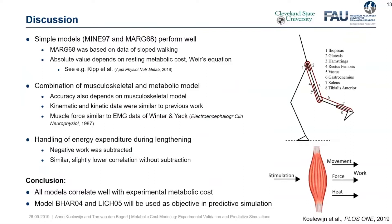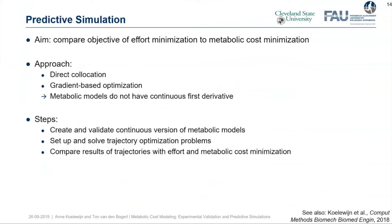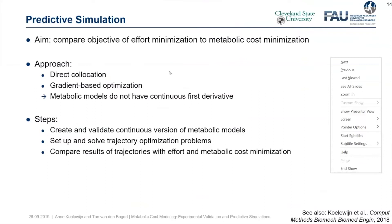Now we move on to the predictive simulations. Our aim was to compare the objective of effort minimization to metabolic cost minimization. Our approach is to use direct collocation and a gradient-based optimization because this is a fast way of solving the optimization problem. However, metabolic models do not have a continuous first derivative, which is required for the algorithm we use. The steps we took were: first create and validate a continuous version of the metabolic model, then set up and solve trajectory optimization problems, then compare the trajectories found by effort and metabolic cost minimization.